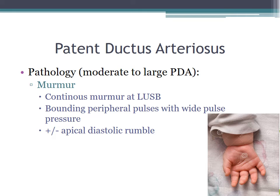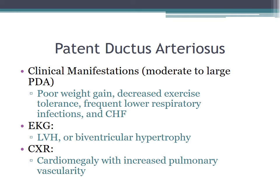In the NICU, feeling prominent palmar pulses increases the index of suspicion for a PDA. Moderate to large PDAs can present with a CHF picture: poor weight gain, decreased exercise tolerance, and frequent lower respiratory infections. EKG typically will show LVH or biventricular hypertrophy, and the chest x-ray shows cardiomegaly with increased pulmonary vascularity.